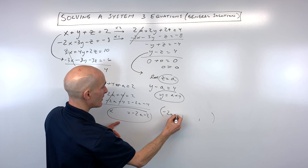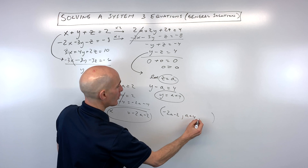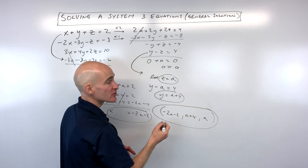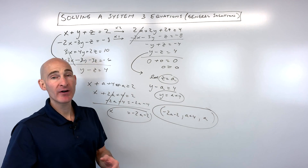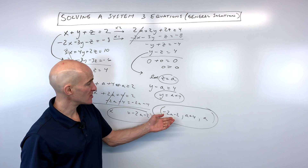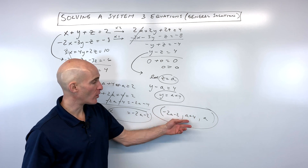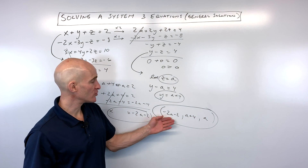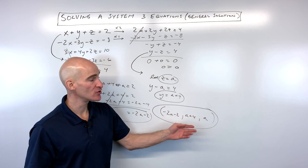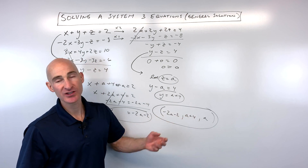So we have x, y, and z all in terms of a: x equals negative 2a minus two, y equals a plus four, and z equals a. This is your general solution. If you want to find specific points on that general solution, you can set a equal to zero, one, two, and so on to generate individual solution points.